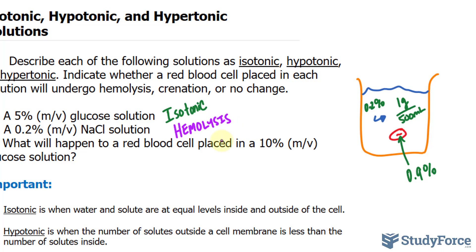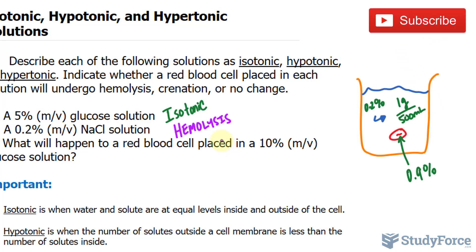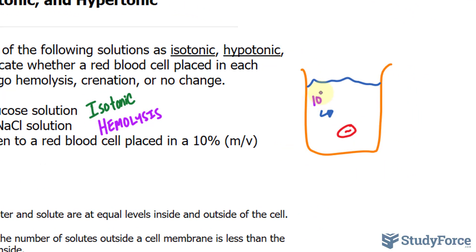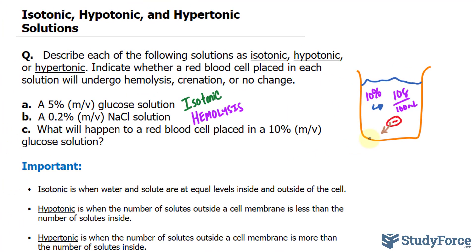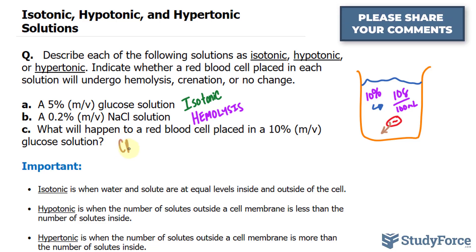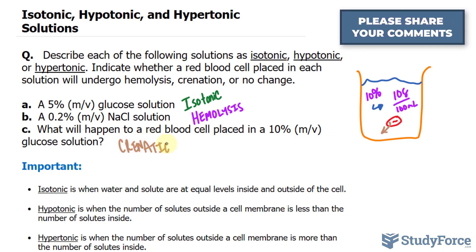Finally, what will happen to a red blood cell placed in a 10% mass per volume glucose solution? The percentage of glucose in a cell is 5%, so this is different. We have 10%, which is 10 grams per every 100 milliliters. Since the cell membrane is permeable only to water, the water within the cell will exit to balance the pressure outside, where the concentration is higher. This is referred to as crenation — where water exits the cell, eventually causing the cell to collapse.